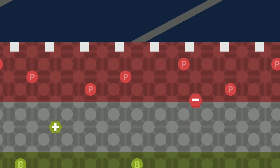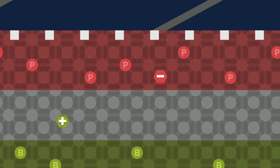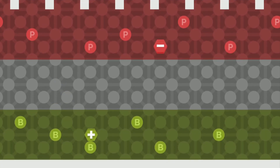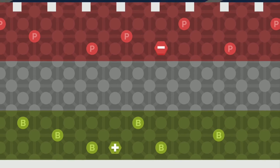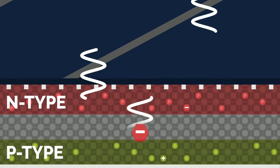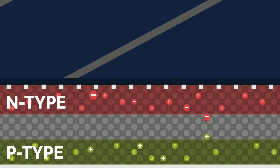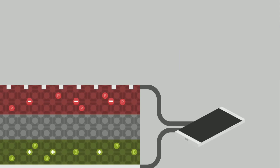The loose electron then moves towards the top and reaches the top n-type layer, which readily accepts electrons. Similarly, the loose hole moves towards the bottom and reaches the bottom p-type layer, which readily accepts holes. This continues as long as sunlight shines on the solar cell. Now that the electrons and the holes have been separated, connecting a wire between the top and the bottom metal electrodes provides a pathway for the electrons to move towards the holes. Flow of electrons is electrical current.